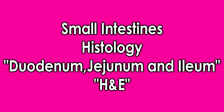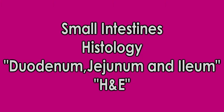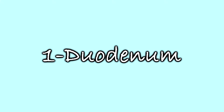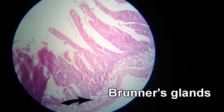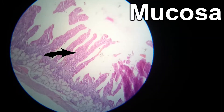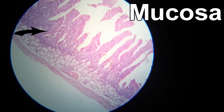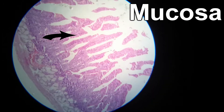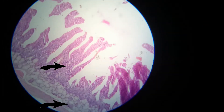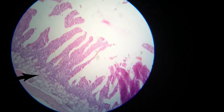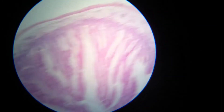Let's talk about the small intestine histology, starting with the duodenum. The duodenum is the first part of the small intestine, and the most characteristic feature is the presence of Brunner's glands, or submucosal mucous glands. The intestinal villi are also present, and may be transversely or longitudinally cut. These two features — Brunner's glands and the villi — are the main features used to diagnose the duodenum.